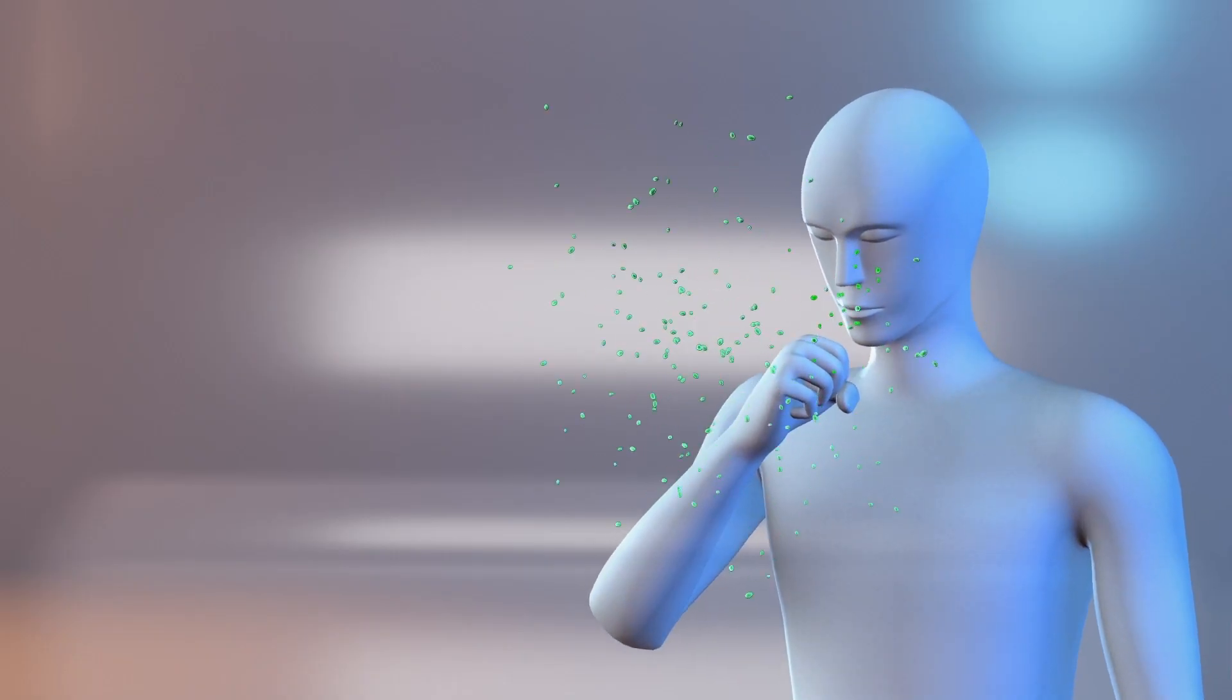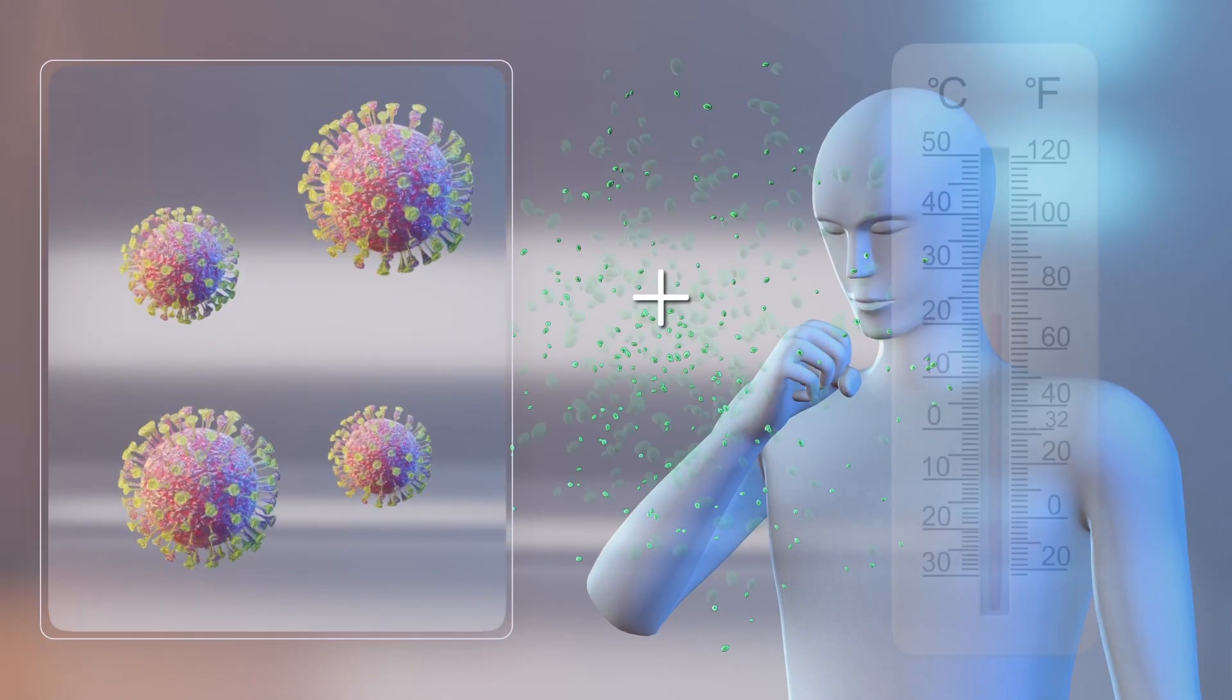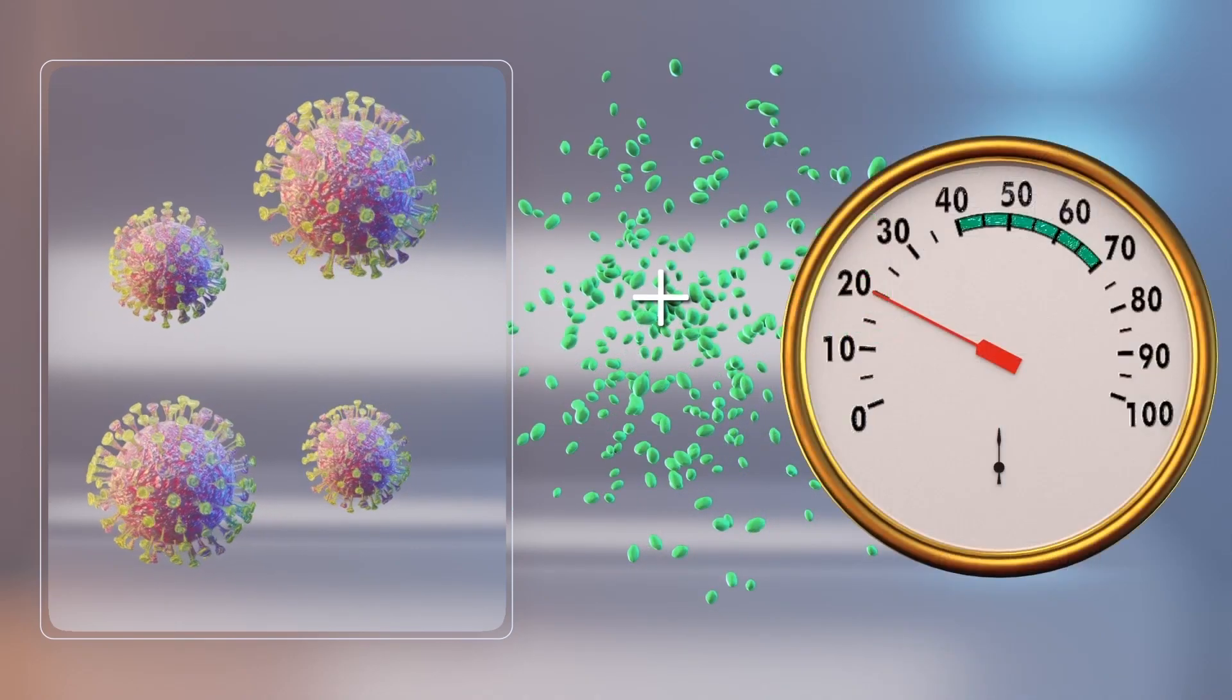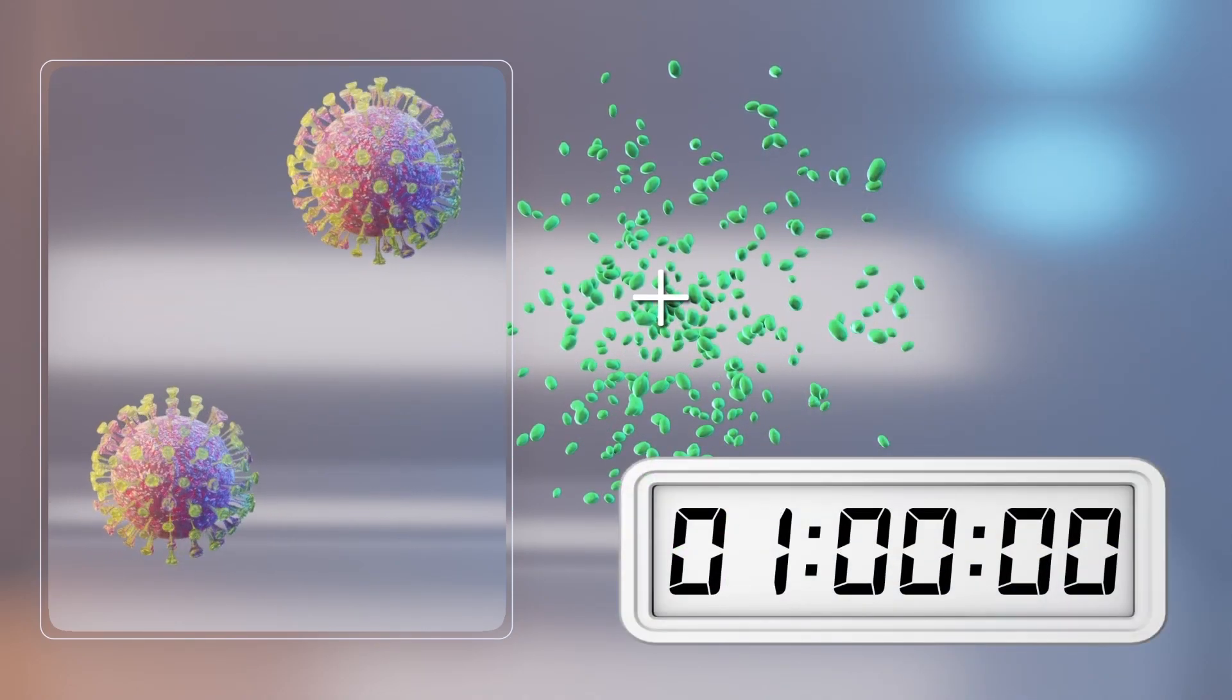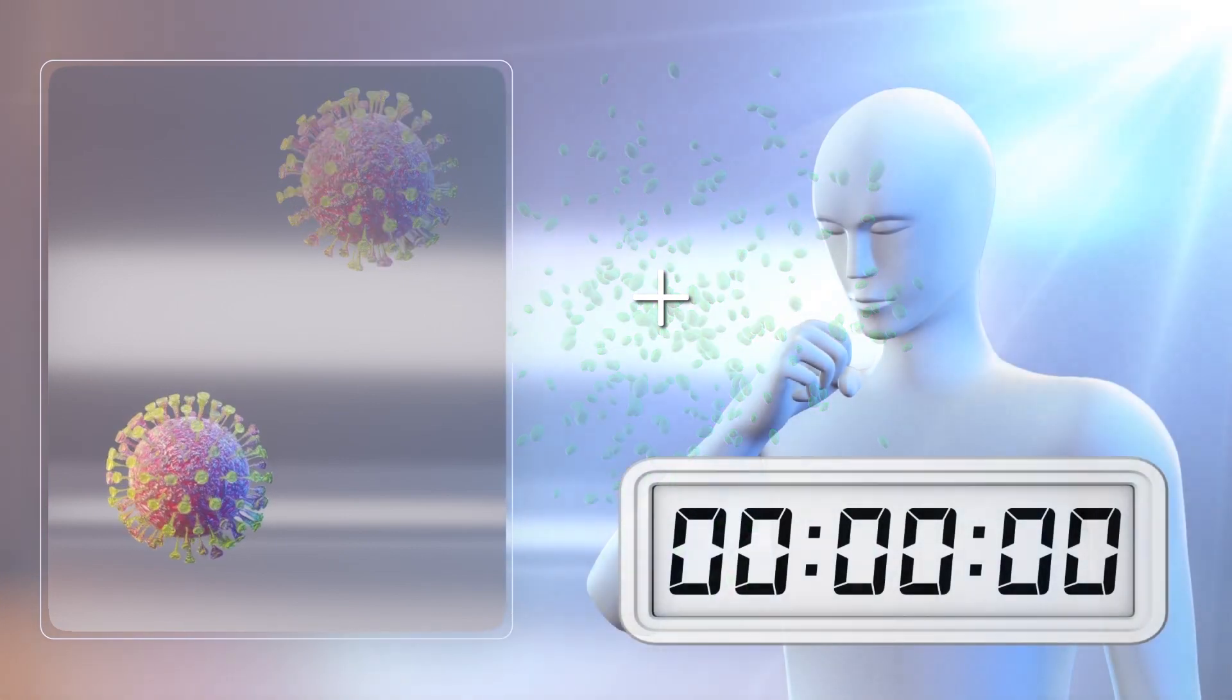When the virus was aerosolized in droplets that hang in the air, its half-life was one hour when the temperature was 70 to 75 degrees Fahrenheit with 20 percent humidity. When sunlight was added to the equation, its half-life was only one and a half minutes.